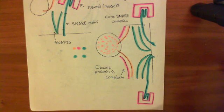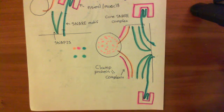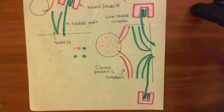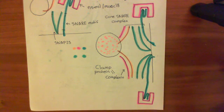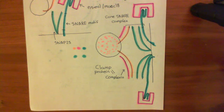Now let's discuss how, when an action potential arrives, you actually couple the arrival of the action potential to the release of neurotransmitter — i.e. the fusion of these synaptic vesicles which are docked at the presynaptic membrane and therefore in the readily releasable vesicle pool — how you actually cause the two membranes to fuse and release neurotransmitter. Then we'll discuss the different types of fusion.